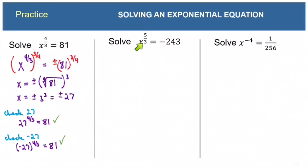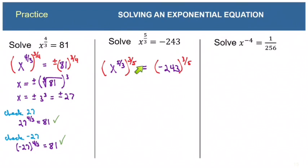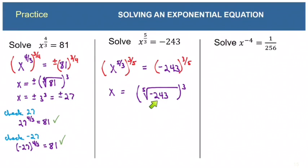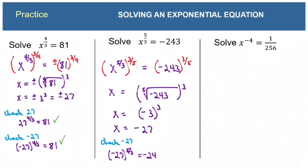For x^(5/3) = -243: raise both sides to the 3/5 power. This time the denominator of the new power is odd (5), so we do not insert the ± symbol. We get x = (5th root of -243)^3. The fifth root of -243 is -3, and (-3)^3 = -27, so x = -27. Checking: (-27)^(5/3) — the cube root of -27 is -3, and (-3)^5 = -243. That checks.